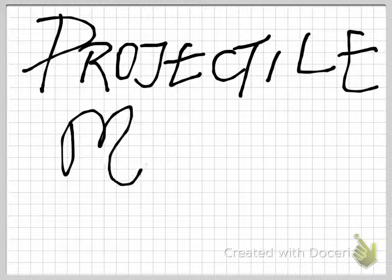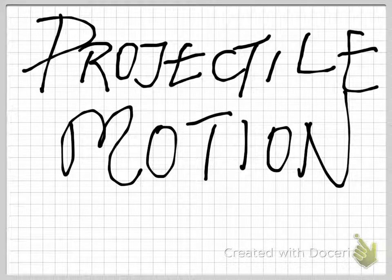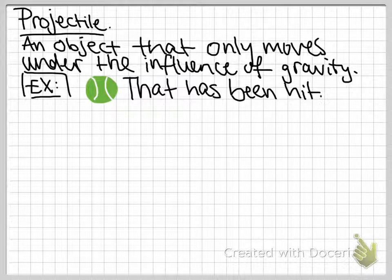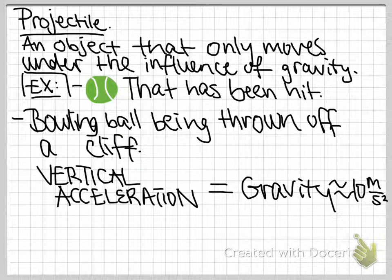This video is going to be talking about projectile motion. So what is a projectile? A projectile is an object that only moves under the influence of gravity. For example, a tennis ball that has been hit or a bowling ball being thrown off a cliff.